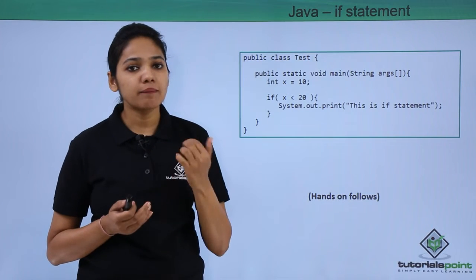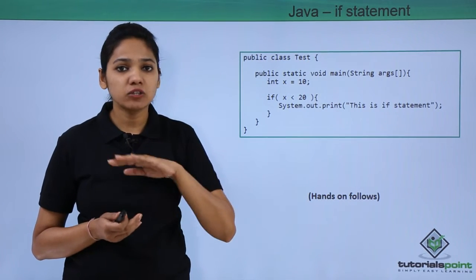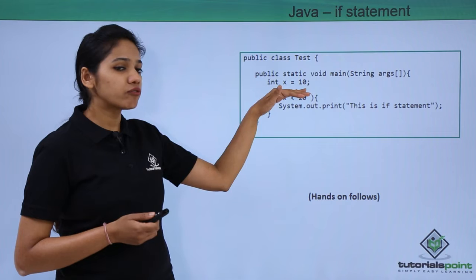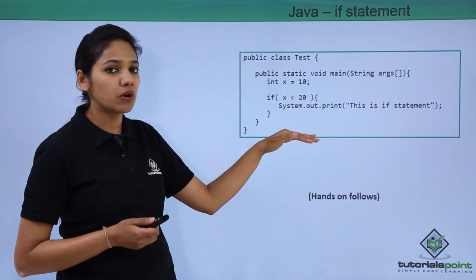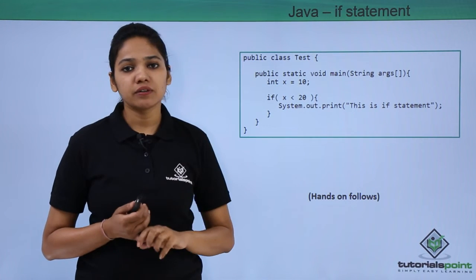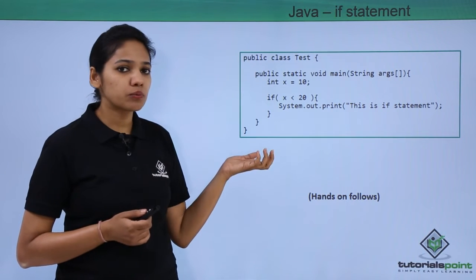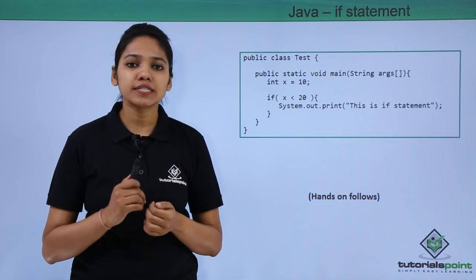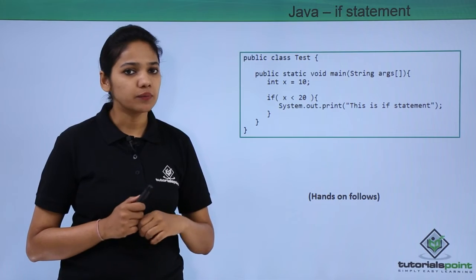If the value of x would have been 30, that is 30 is not less than 20, it would have not executed this block of statements and terminated the program. So let us execute this program practically to understand how an if condition works.